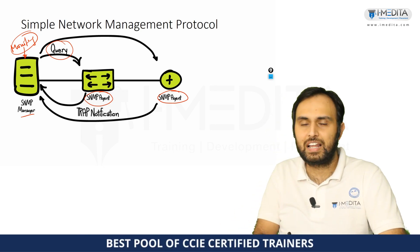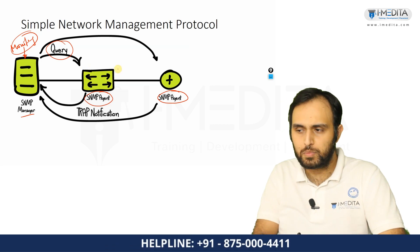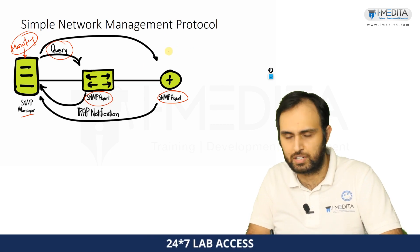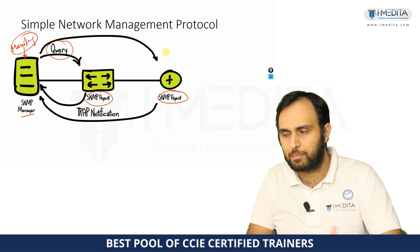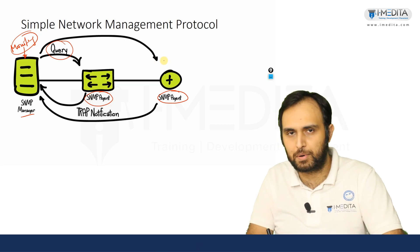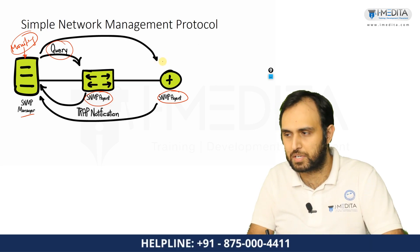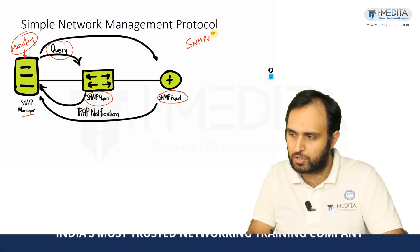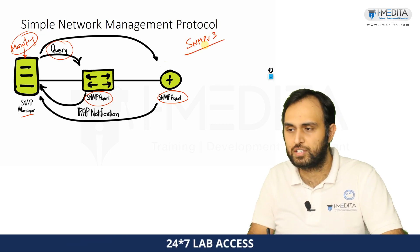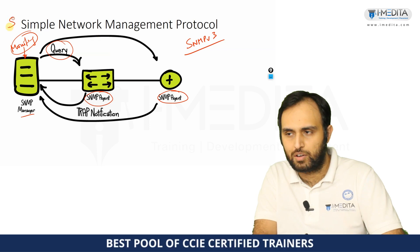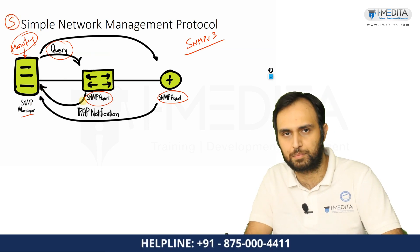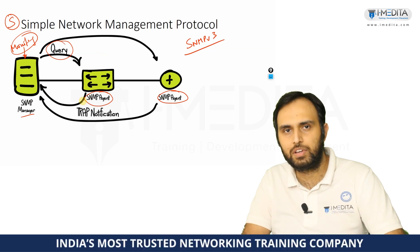With SNMP version 1 and 2, all communication between the SNMP manager and agent was clear text — there was no encryption involved. Some people were skeptical about that. With SNMP v3, sometimes referred to as secure SNMP, the communication between manager and agent gets encrypted.